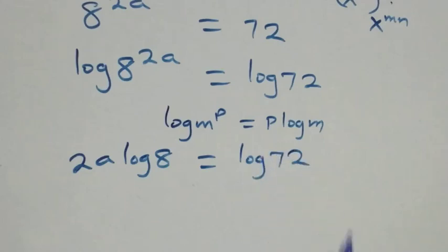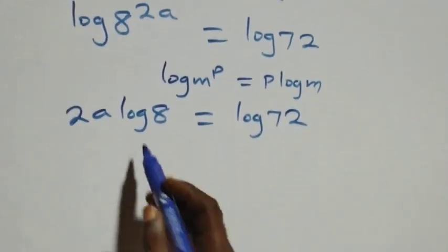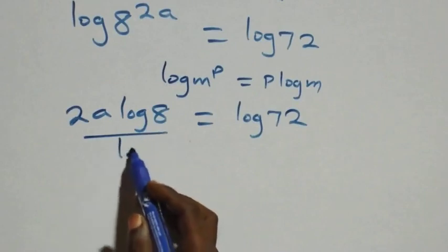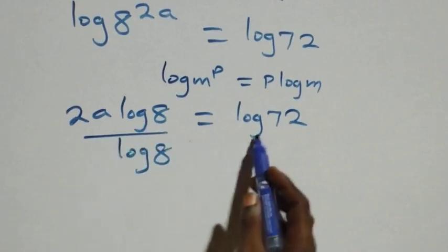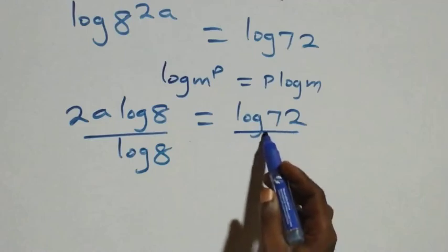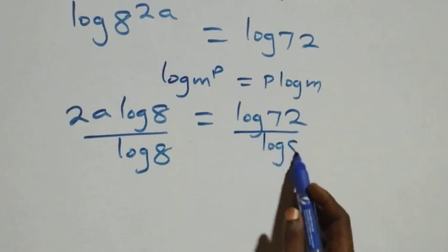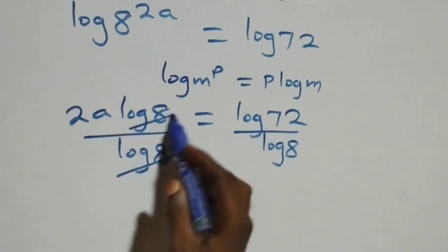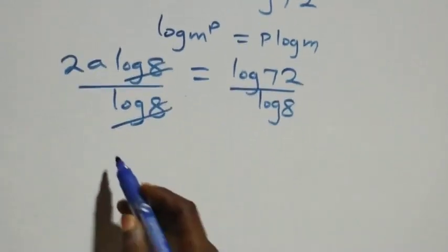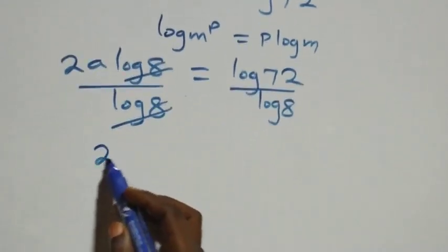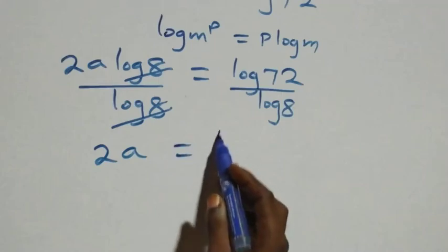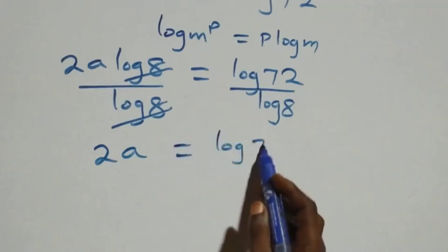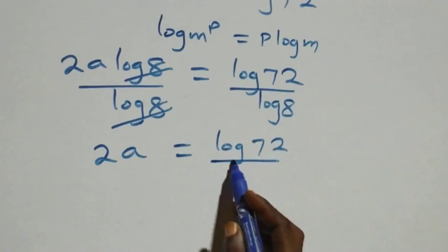In the next step we divide both sides by log 8. Log 8 cancels on the left side and we are left with 2a, which is now equal to log 72 over log 8.